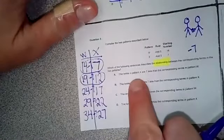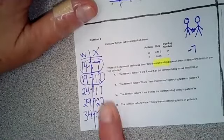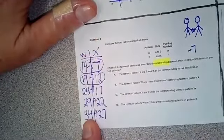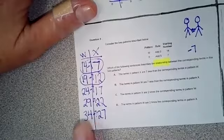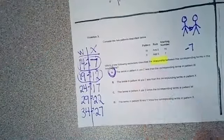Okay, so let's read it. It says the terms in pattern X are always seven less than the terms in pattern W. Yes, that is absolutely the correct answer. You can read down through the rest of them, but that is the correct answer.